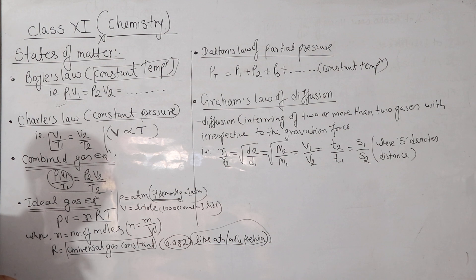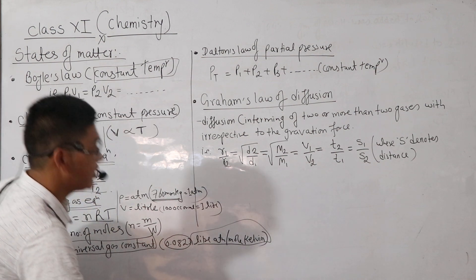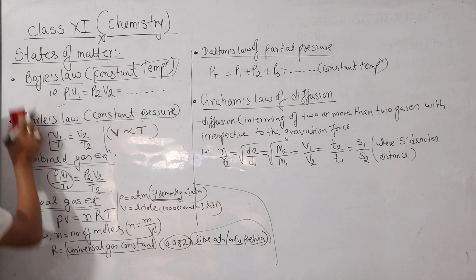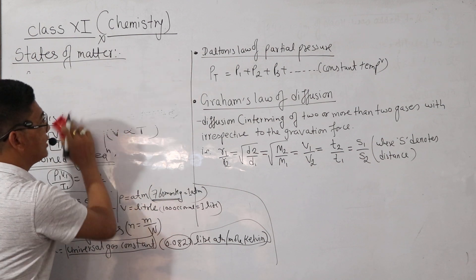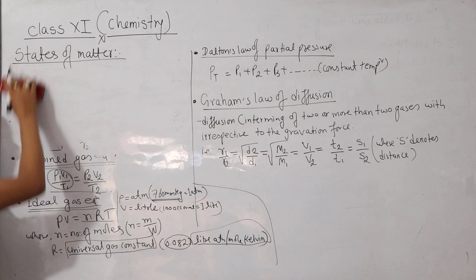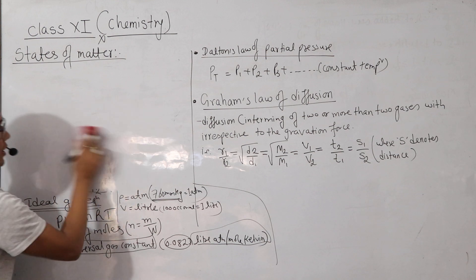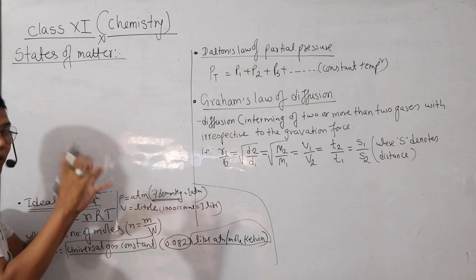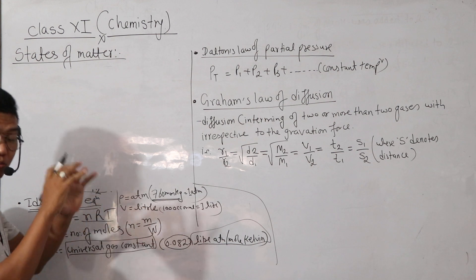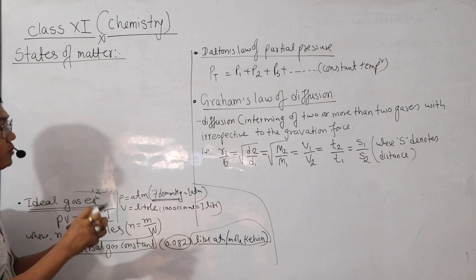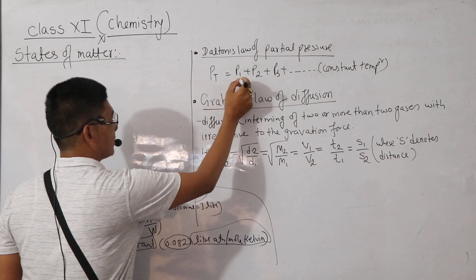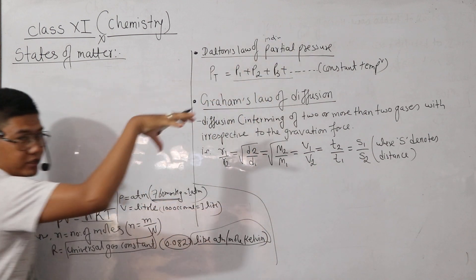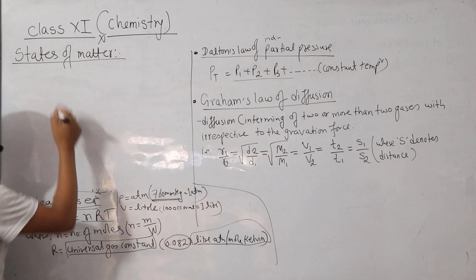This is Dalton's law of partial pressure. What does Dalton's law of partial pressure mean? Temperature is constant. The non-reacting gases in the same container — the total pressure will be the sum of the individual partial pressures of each gas. The partial pressure is the individual pressure, and the total pressure is equal to it.